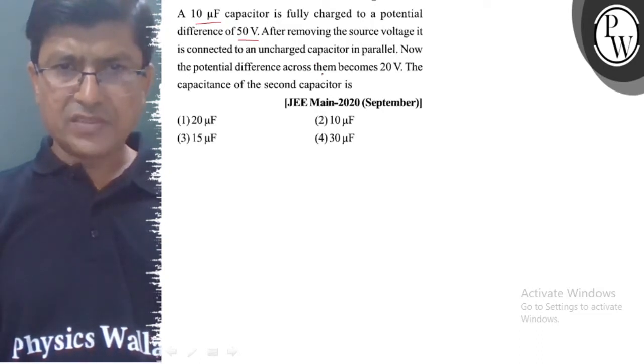Now, the potential difference across them becomes 20V. The capacitance of the second capacitor is.